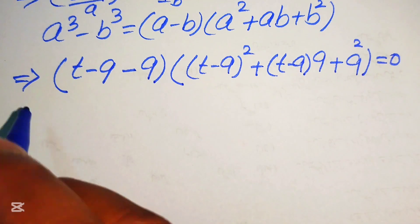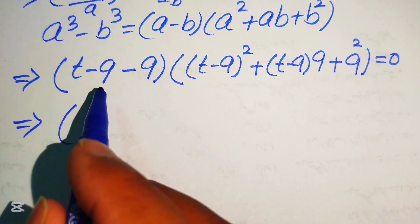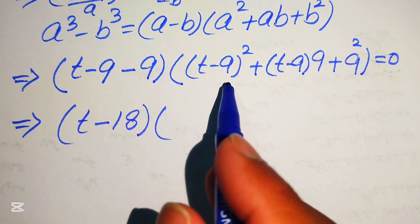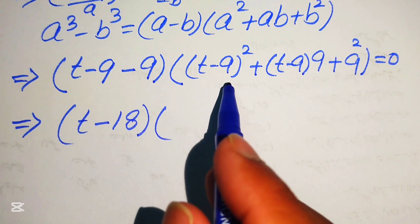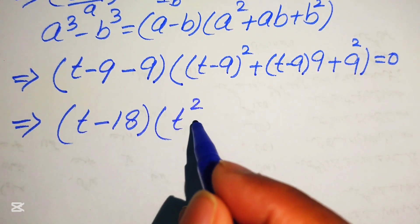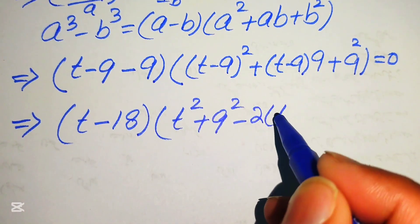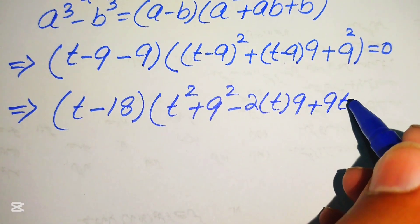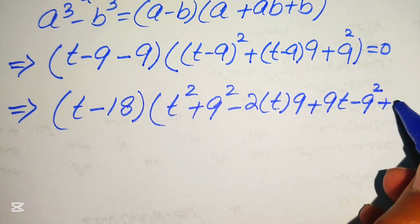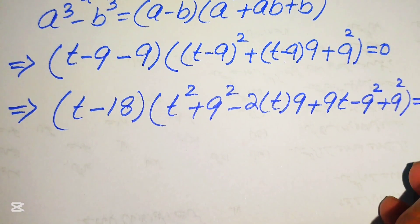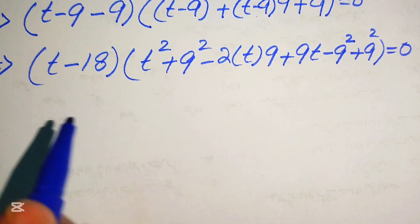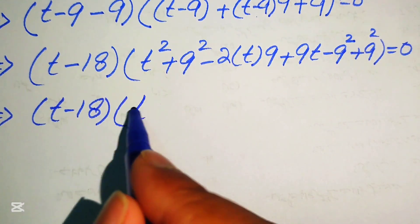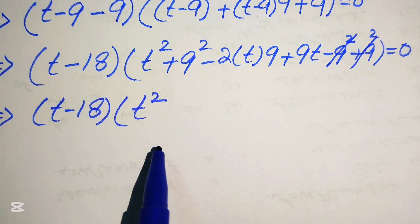Simplifying the first factor: t - 9 - 9 = t - 18. For the second factor, we expand (t - 9)² as t² + 81 - 18t. Then we multiply 9 by both terms giving 9t - 81, and add 9² which is plus 81, setting the whole expression equal to 0.